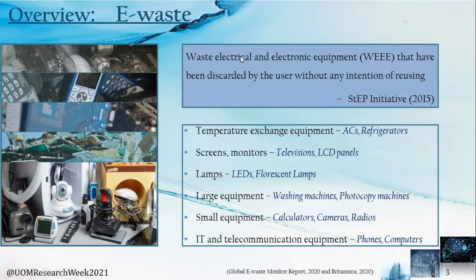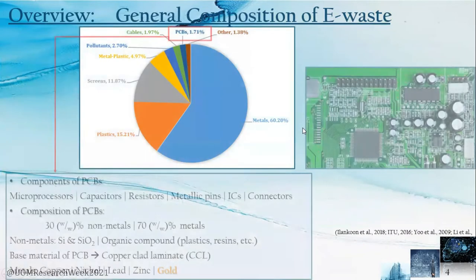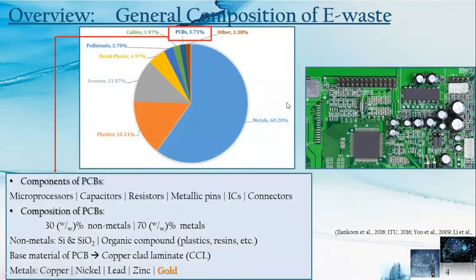E-waste is waste electrical and electronic equipment that have been discarded by the user without any intention of reuse. Simply, e-waste can be categorized into 6 classes, as listed here. E-waste mainly consists of metals and plastics, with the composition of metals exceeding 60%. The significant electronic component in e-waste is printed circuit boards.